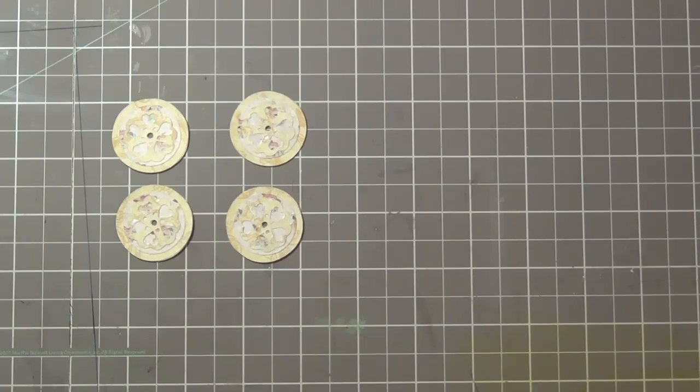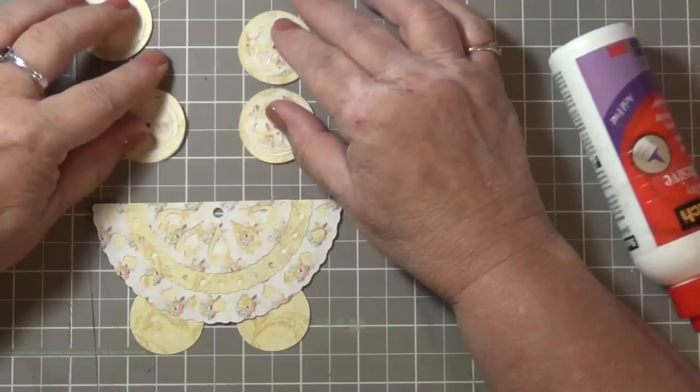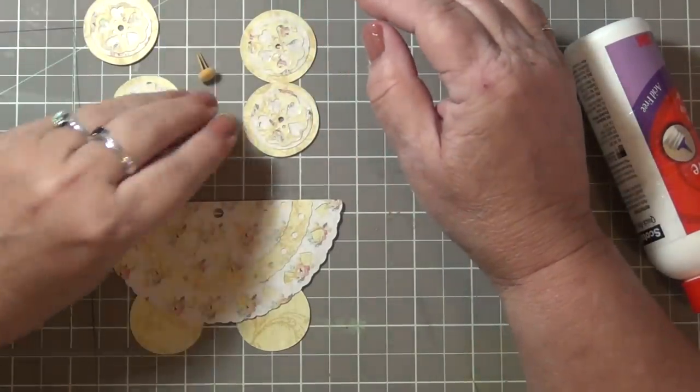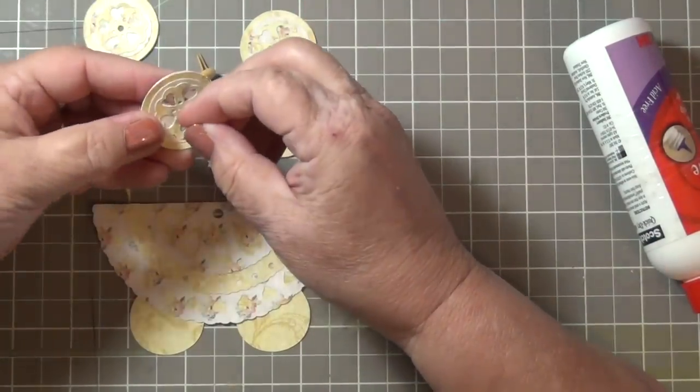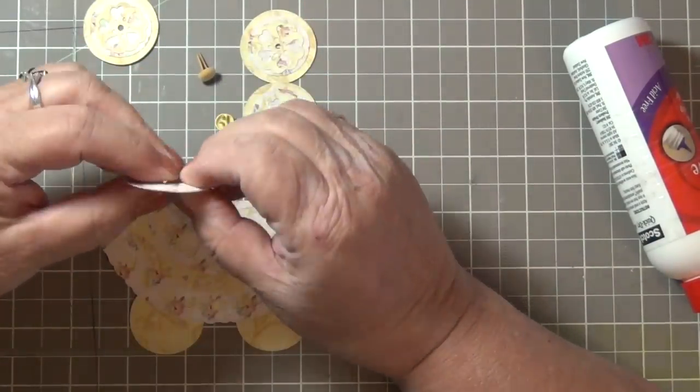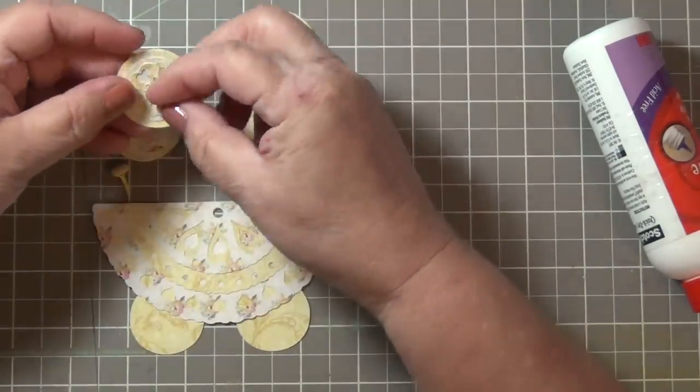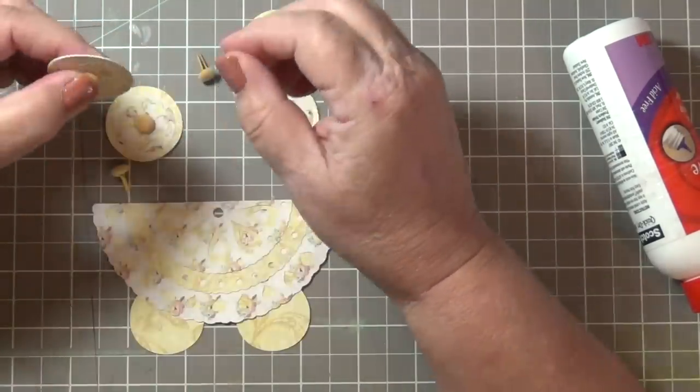The next thing you're going to do is add some brads or some adhesive dots or gems to the center of the wheel. I like to use the brads. This particular brad is from Oriental Trading.